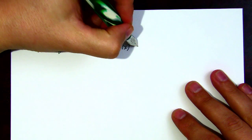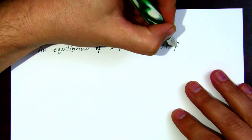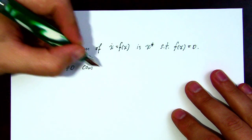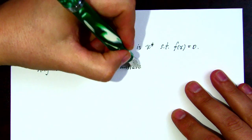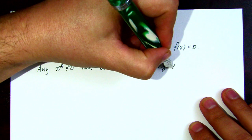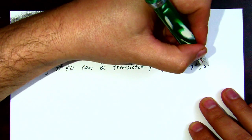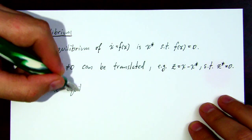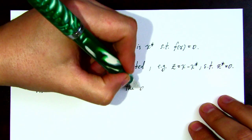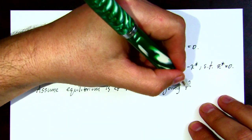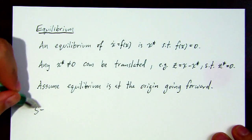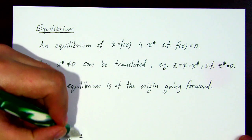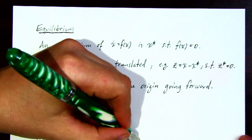We'll start with the definition of an equilibrium of an autonomous system. The equilibrium is the state x that makes the right-hand side equal to zero, so x-dot equals zero, hence x does not change. If the equilibrium is not at the origin you can always translate it there, even if the system is nonlinear, using a simple transformation. Going forward we'll assume our equilibrium is always at the origin.